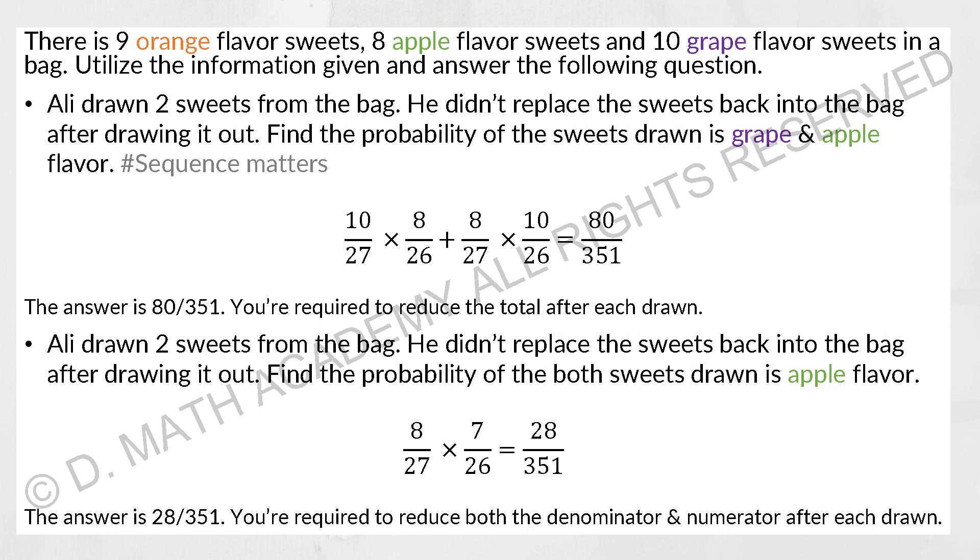For the next set of questions, we have Ali drawn two sweets from the bag. He didn't replace it back. Find the probability that both sweets drawn is apple. So same thing, 8 over 27 multiplied by 7 over 26, because I took out one apple already. So the amount of apple decreased and the denominator decreased as well. So the result is 28 over 351. So this decreasing denominator and numerator concept is also involved when they want you to do students calculation. When it comes to some question, they might not specify it, but you need to know it in default what is the applicable concept.